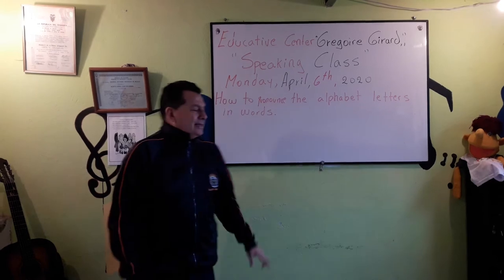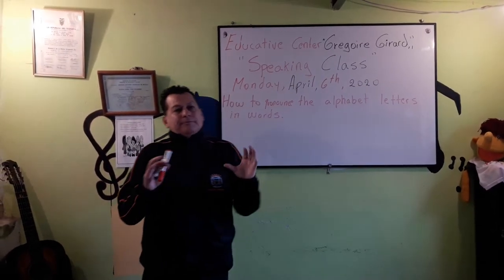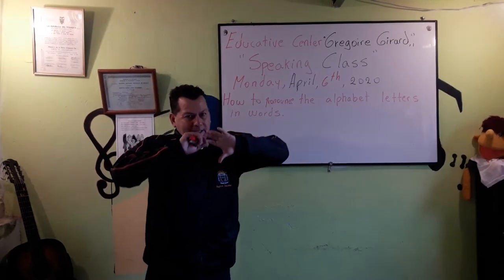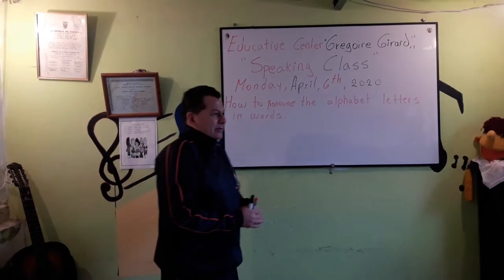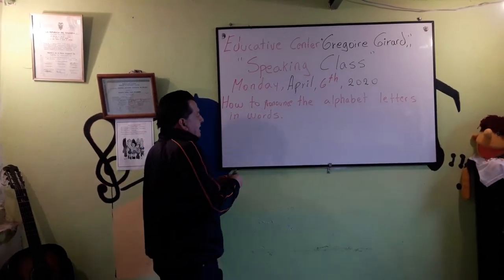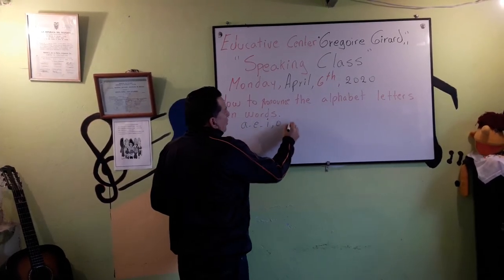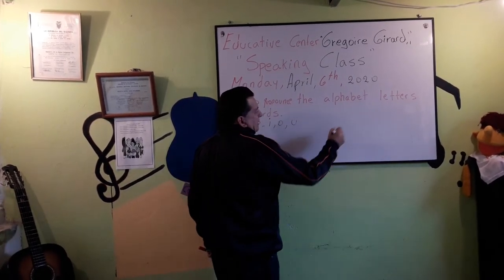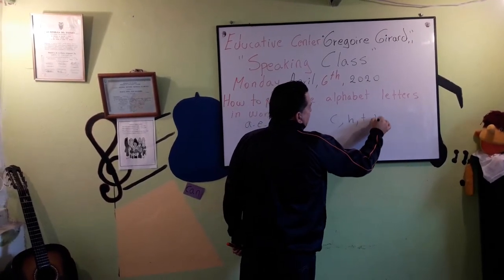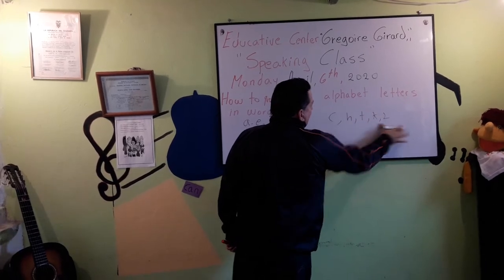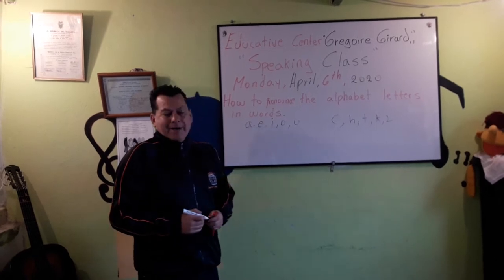For example, you know that in the alphabet you have vowels and you have consonants. The English alphabet is formed by vowels and consonants. We have the vowels which are A, E, I, O, U, and the rest are consonants — C, H, T, K, L. All of these are consonants, and those are vowels.